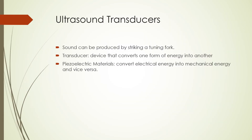Let's now look at ultrasound transducers. Audible sound waves can be produced by hitting a piece of metal like a tuning fork, causing it to ring. The same basic principle is used to produce ultrasound waves, but in this case an electric pulse is used as a hammer to cause deformation and vibration of a special crystalline material, which then produces sound. A device that converts one form of energy into another is called a transducer. Transducers convert electrical energy into mechanical energy by producing sound, and returning sound echoes convert their mechanical energy back to electrical energy, which is the detected signal.